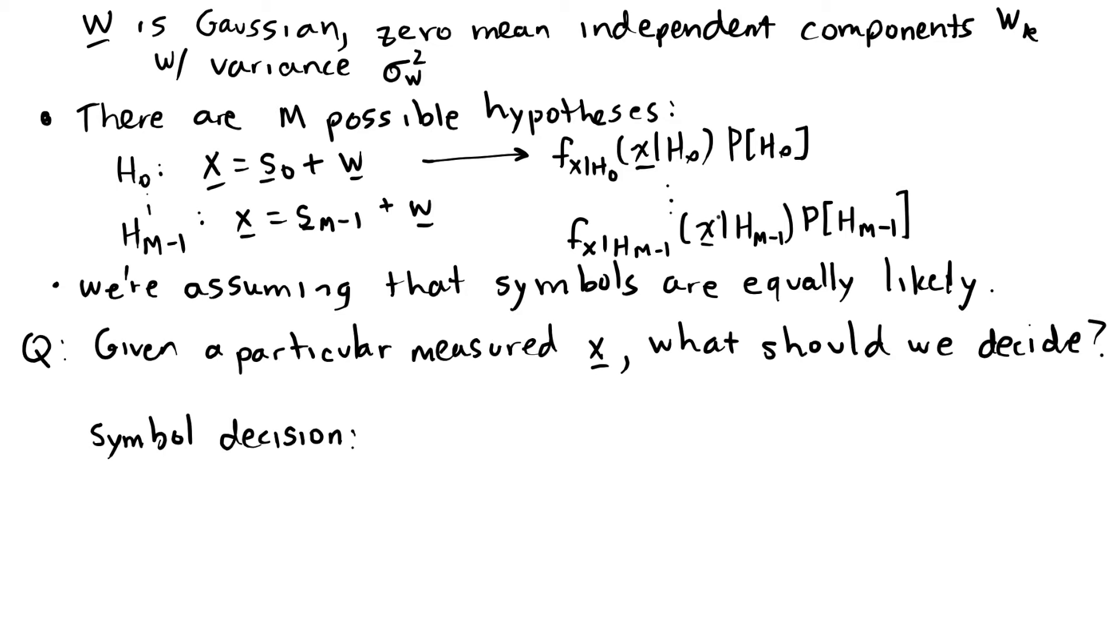what we do is we find the joint probability density that x is true and the decision was Hi for each hypothesis Hi. So we write that as an argmax, that means to find the i that maximizes this expression of the probability density function given H sub i multiplied by the probability of H sub i.